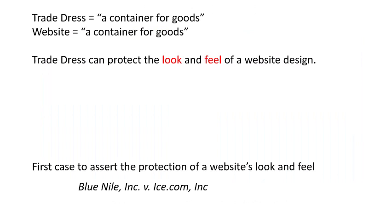Trade dress is generally what protects the look and feel of a website. If you use a very sparse, minimal design like Google — nothing on the page except something at the top and a search bar — Google could say that you copied the look and the feel. Even if it didn't say Google, if the look and feel would confuse the consumer, there may be a case for infringement.